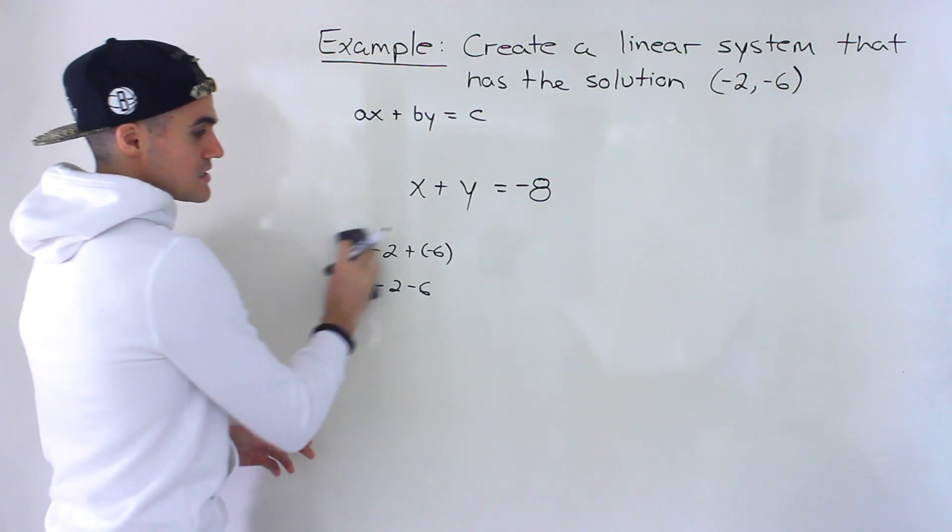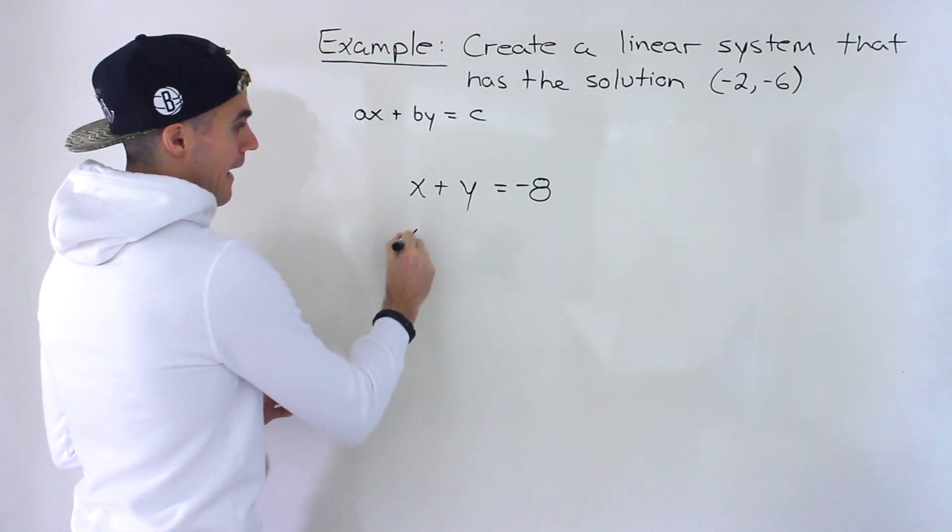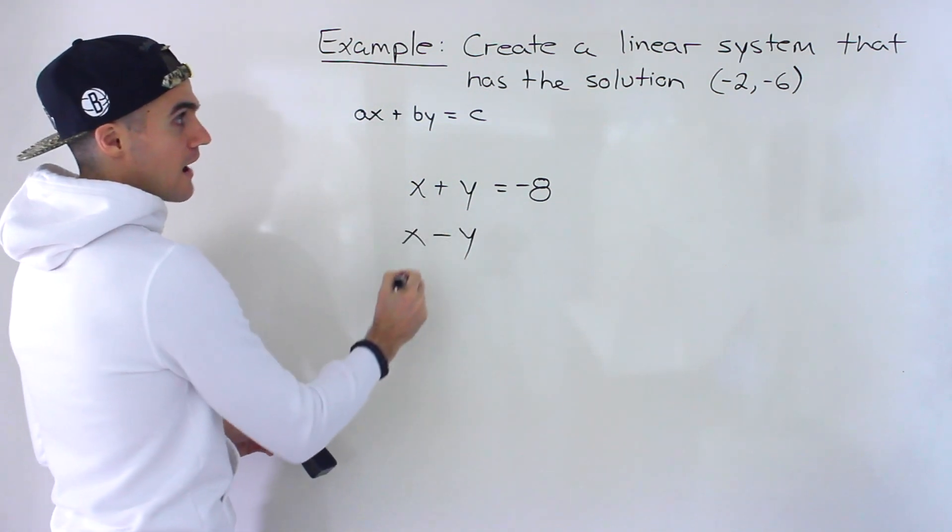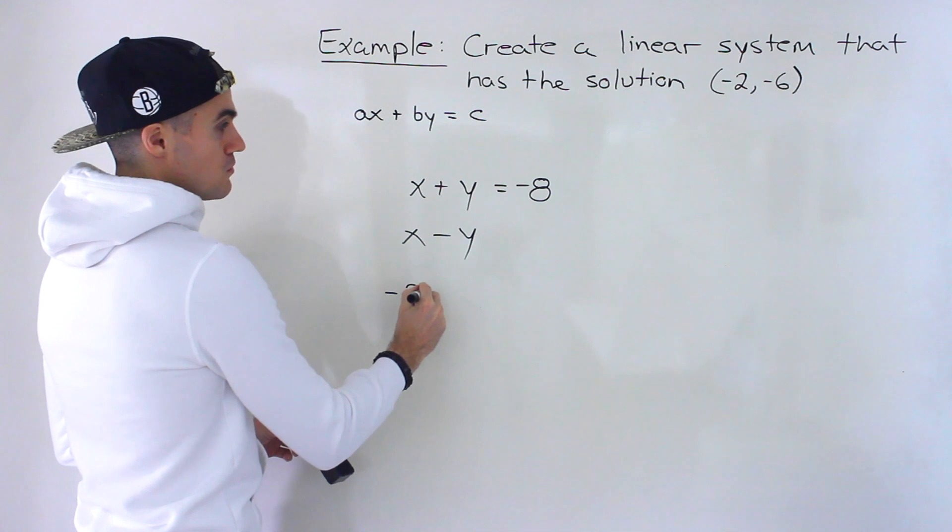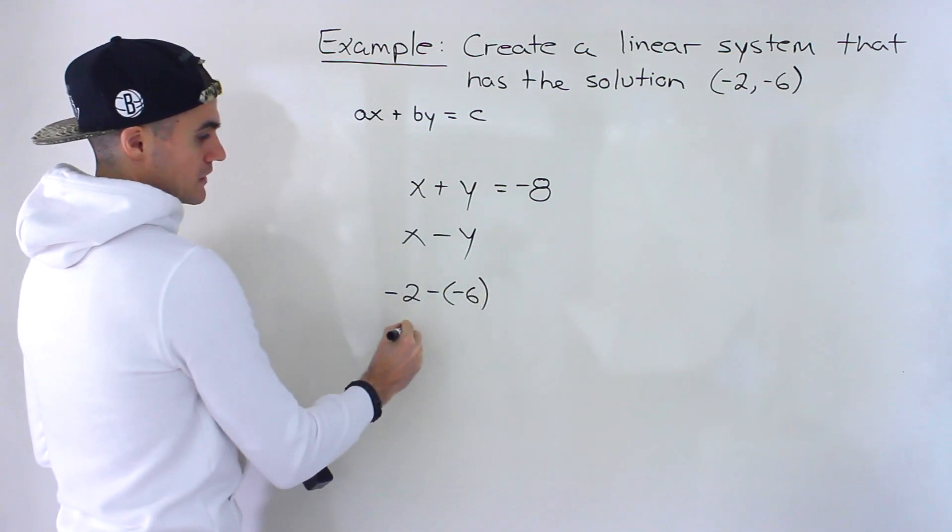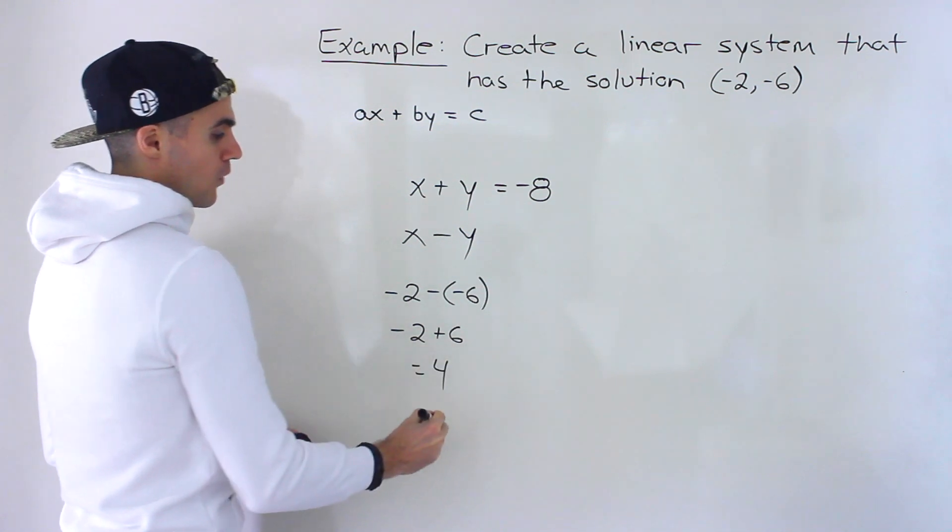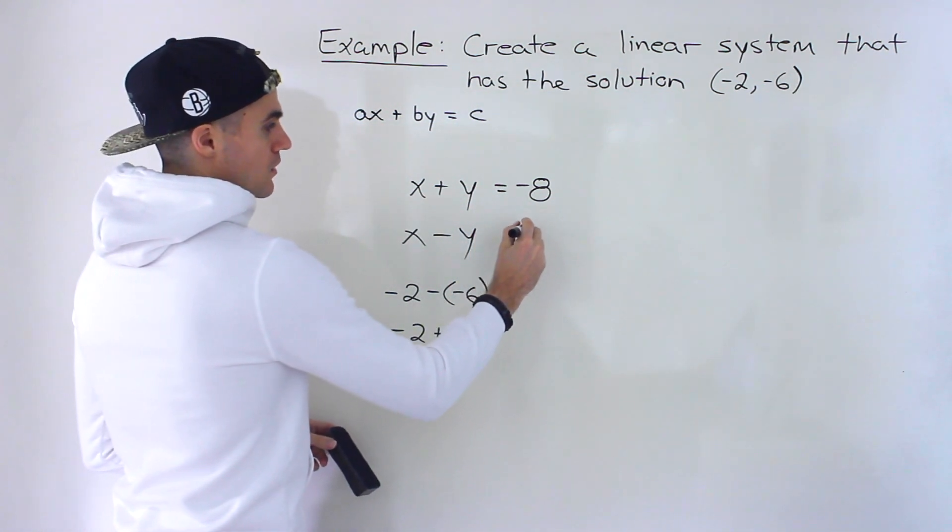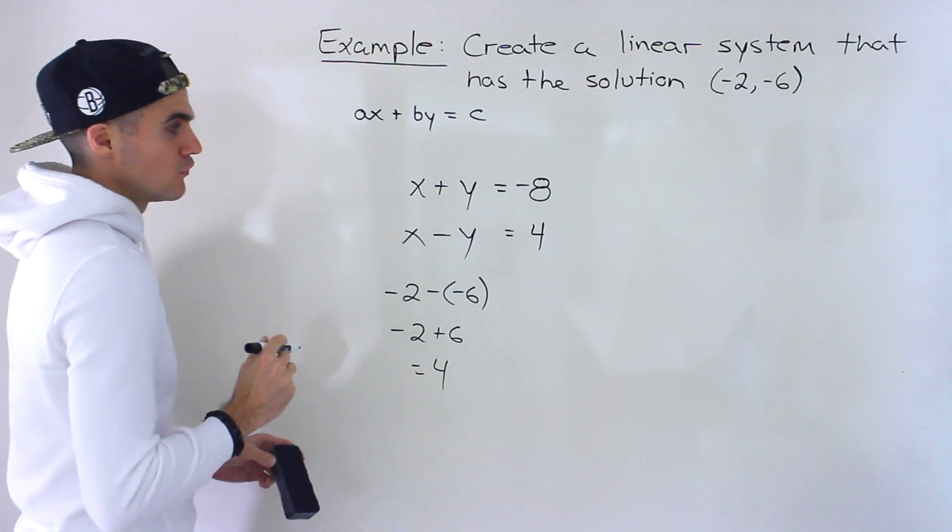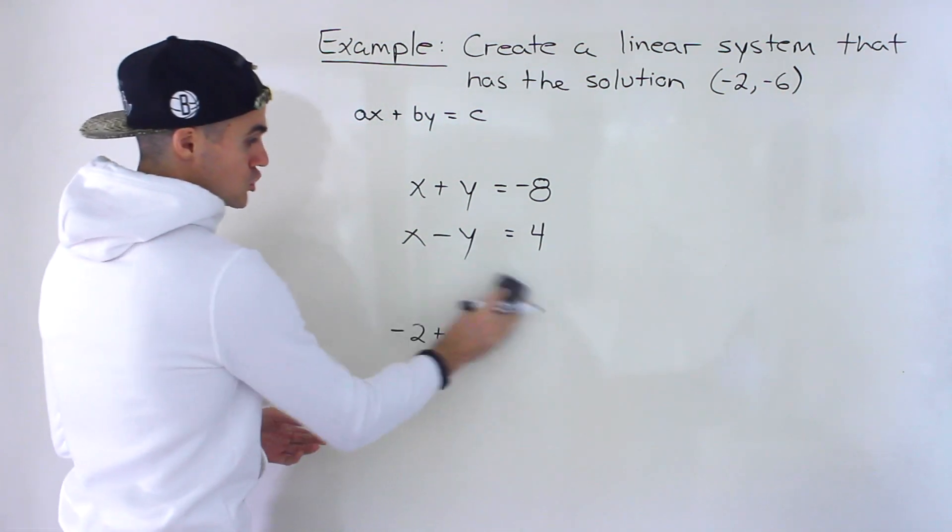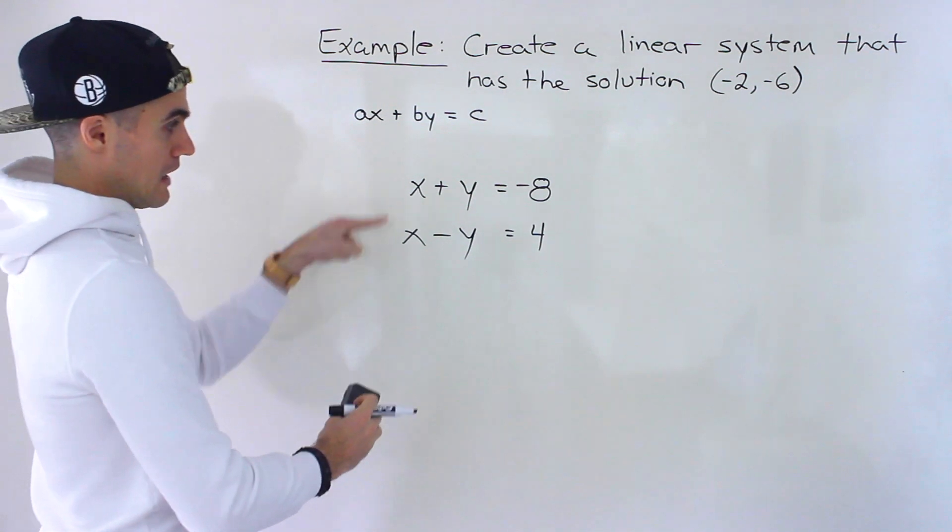And then another easy one is just to do x minus y. So if we do that, we would have negative 2 minus negative 6, which would be like negative 2 plus 6, which would give us 4. So this right side would have to equal 4. And that's a solution right there. So these are two different lines.